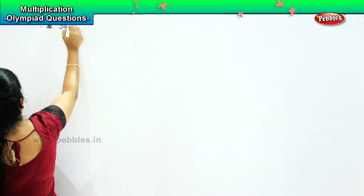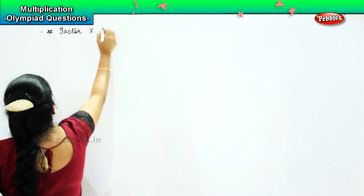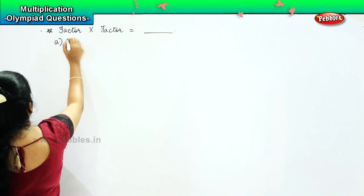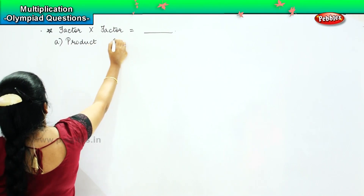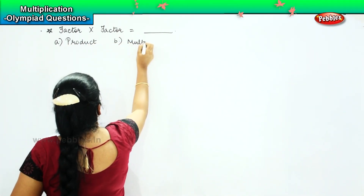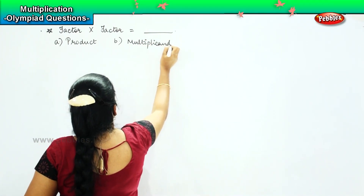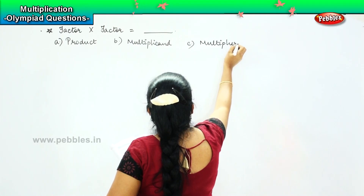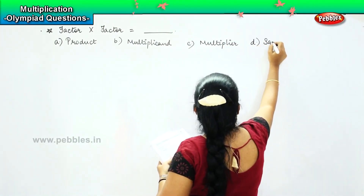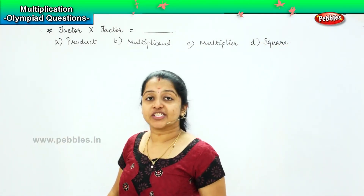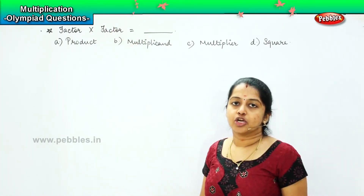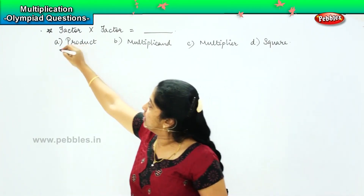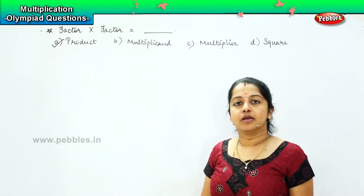The question says: factor into factor is equal to dash. Your options are: A) product, B) multiplicand, C) multiplier, and D) square. Factor is nothing but the multiplicand. So, multiplicand into multiplicand will give me the product. Option A, product, is the right answer.